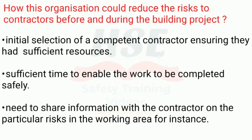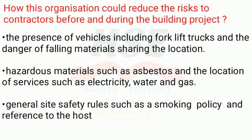How an organization could reduce the risks to contractors before and during a building project: initial selection of a competent contractor ensuring they had sufficient resources and sufficient time to enable the work to be completed safely. There is a need to share information with the contractor on the particular risks in the working area, for instance the presence of vehicles including forklift trucks, the danger of falling materials, the location of hazardous materials such as asbestos, and the location of services such as electricity, water and gas.